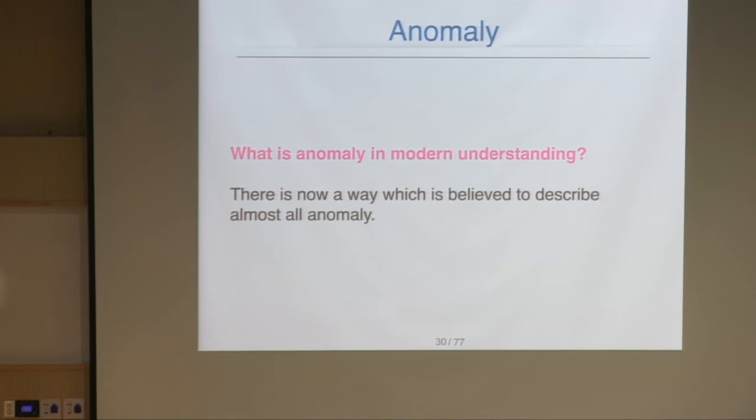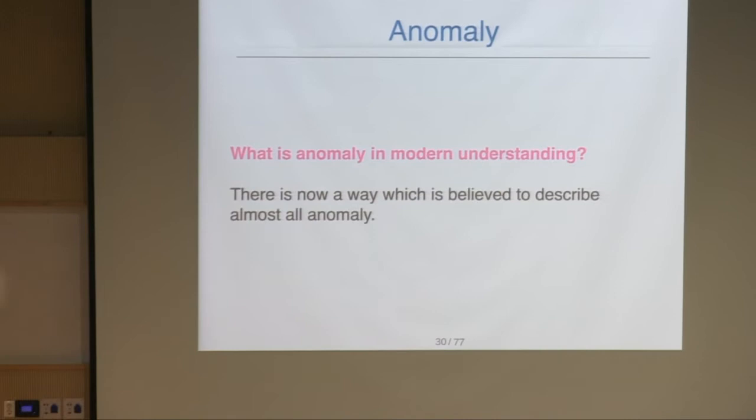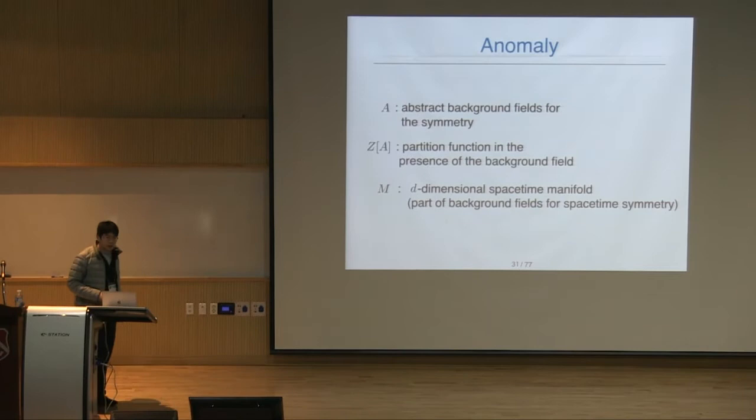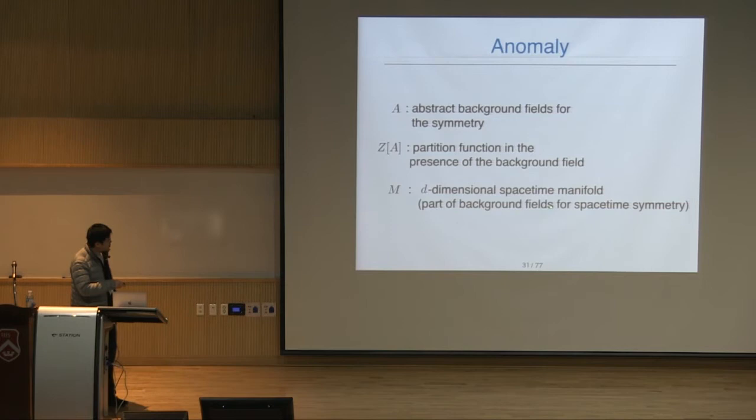Let me remind you the notation. I denote by A the abstract background fields, by Z the partition function in the presence of the background field, and by M the spacetime manifold — a D-dimensional spacetime manifold. M can be considered as part of the background fields for spacetime symmetry, such as Lorentz symmetry and time-reversal symmetry.